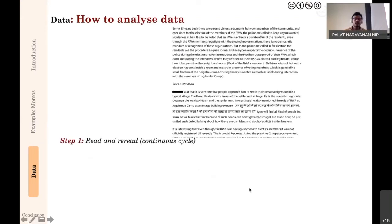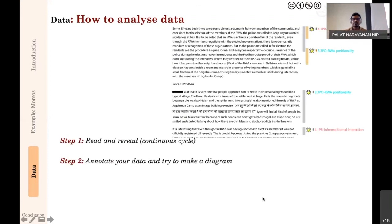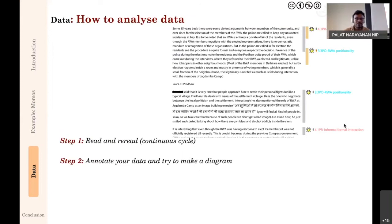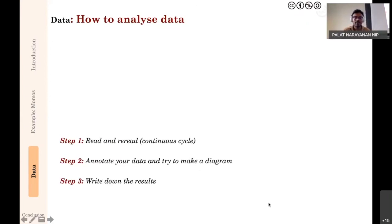For analysis — which we will also practice tomorrow — most things boil down to text. You read and reread all your interview notes and field notes in a continuous cycle, annotating to find patterns, grouping passages about similar themes, making diagrams. Like a Sherlock Holmes board with threads, you connect things. You write down results, explain the diagrams, then go back to step one again. It's a continuous cycle: reading, annotating, finding results, then returning to your notes from a new angle.